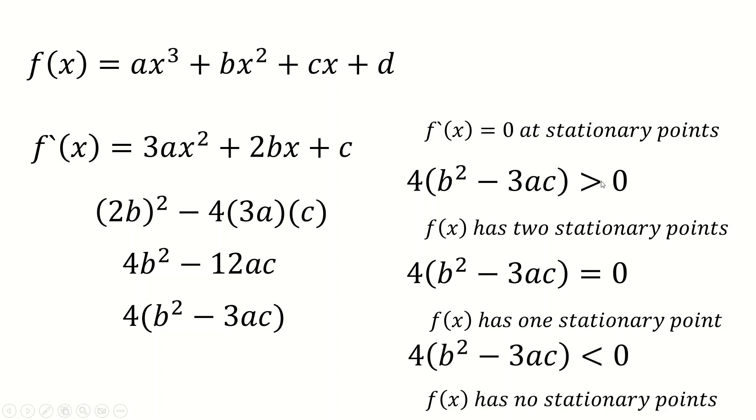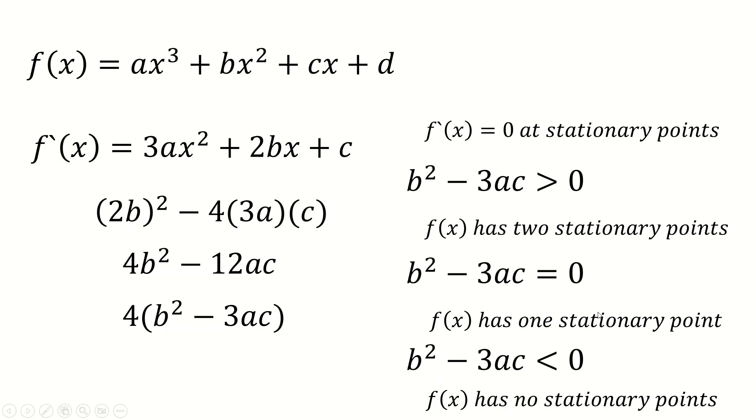And that's pretty cool because of course, now I can just divide all of this by 4 because 4 is just a positive number. So it's not going to change any of this. And I can end up with my b squared minus 3ac rule. And that's pretty cool. So b squared minus 3ac tells us how many stationary points a cubic equation has. And you might think that's not amazingly useful. Maybe it's not. I just think it's pretty cool.